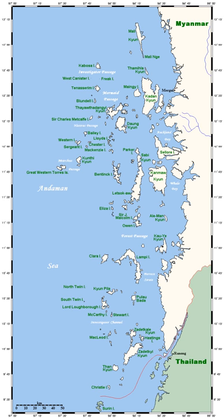Archipelagos may be found isolated in large amounts of water or neighbouring a large land mass. For example, Scotland has more than 700 islands surrounding its mainland which form an archipelago.